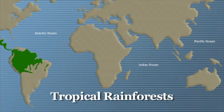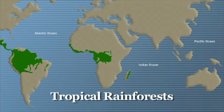Tropical rainforests are also found in Africa, in Zaire and Madagascar, and the west coast of India, Southeast Asia, New Guinea, and parts of Australia.